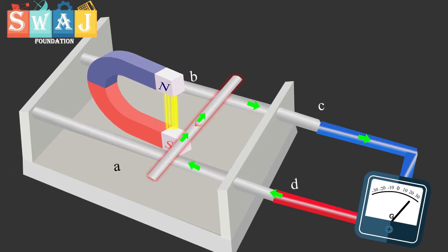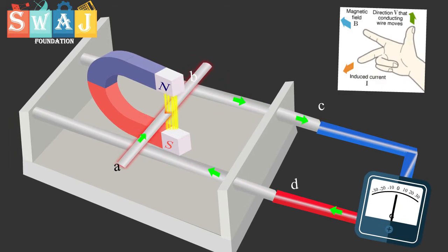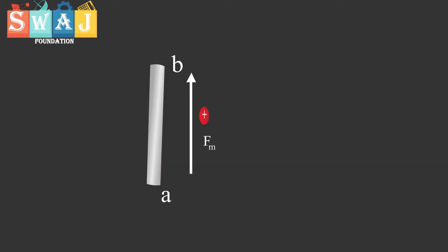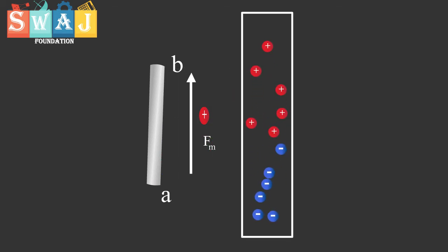When the rod moves in the presence of magnetic field and we apply right-hand rule, we see that magnetic force is directed from A to B in the rod. As a result, the positive charge migrates to the top end of the conductor. As more and more of the positive charges migrate, concentration of the positive charges is produced at the top B and the deficiency of positive charges at the bottom A.